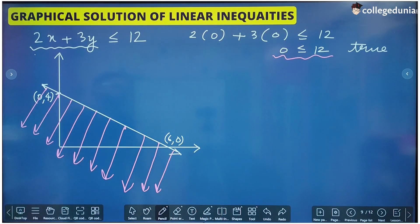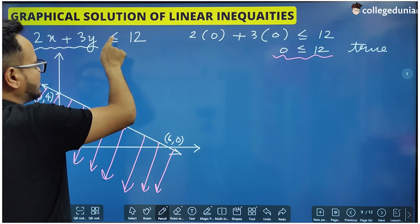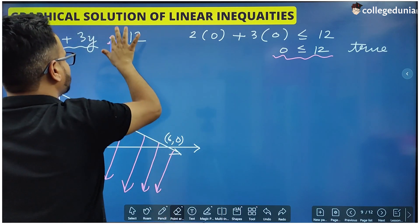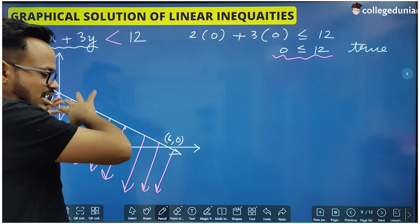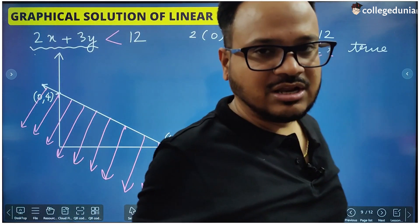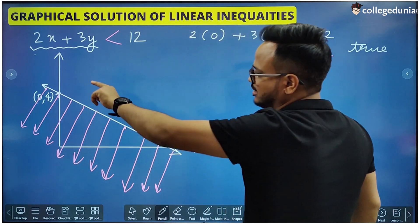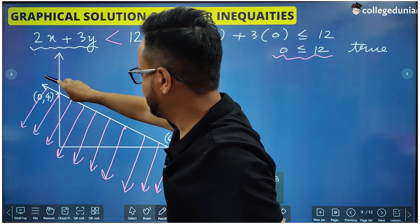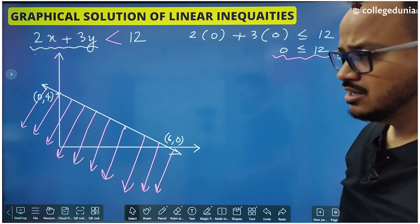There is one important thing to keep in mind. If there was no equal to sign — just a strict less than sign — the whole procedure remains the same with one small difference: you draw this line in dotted form, not solid form. Otherwise everything is the same.